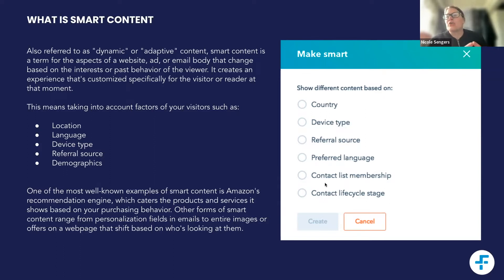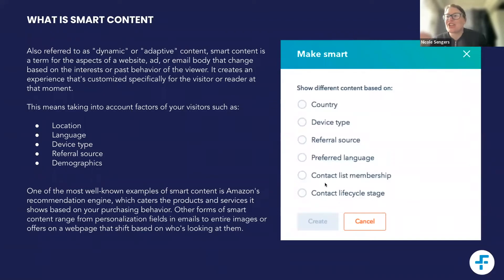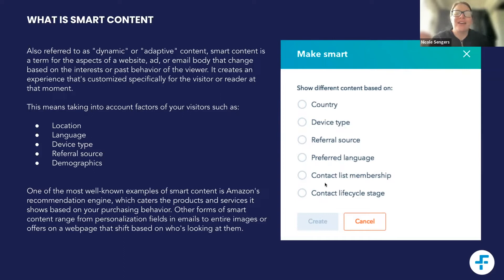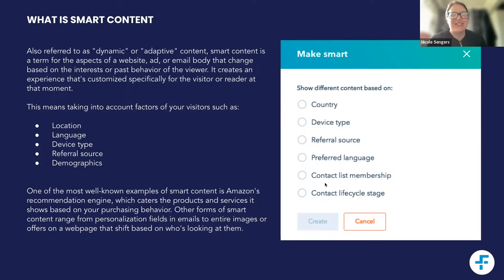One of the most well-known examples of smart content that most people have actually come across is Amazon's recommendation engine, which tailors the product and service being shown based on your purchasing behavior. You can also pair it back — and probably all of us have experienced good and bad versions of the personalized first name.